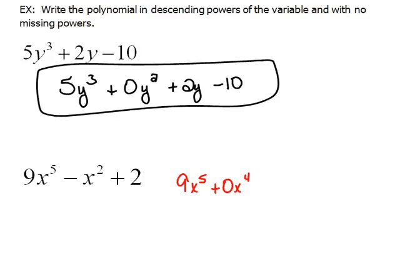0x⁴. 5, 4, next would be 3. But we don't have any 3s, so we'd have to put in another 0 placeholder, 0x³. So 5, 4, 3, next comes 2. We do have an x². In fact, we have a minus x².